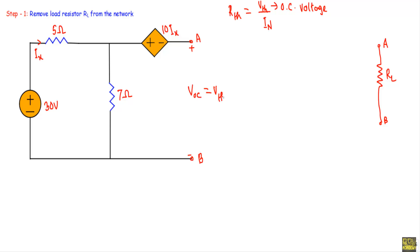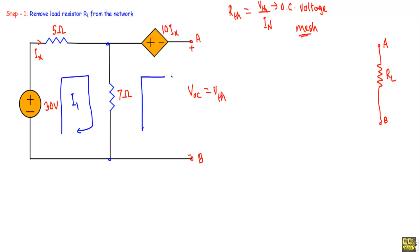To calculate Thevenin voltage, I will use mesh analysis. This is mesh 1 with mesh current I1. Looking at mesh 2, it has an open circuit portion, so mesh 2 current I2 should be equal to zero because the A-B path is open.